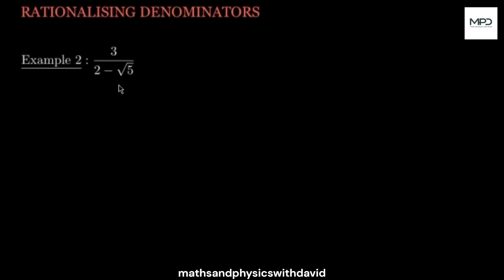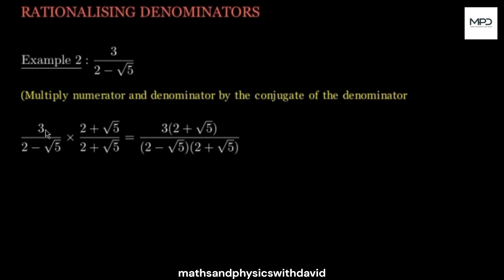Now let's look at the next example. When you see a question like this, the first thing you have to do is find the conjugate of the denominator — the conjugate simply reverses the sign, so the opposite of negative is positive. You multiply the entire question by the conjugate of the denominator. So 3 times 2 is 6, and 3 times root 5 is 3 root 5, because there is an invisible 1 at the back of this root 5. So 3 times 1 is 3, giving you 3 root 5.